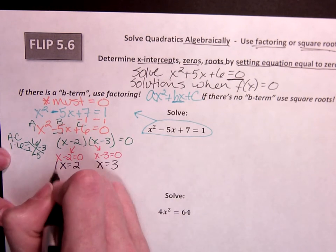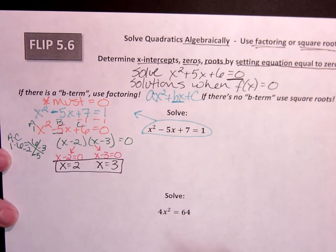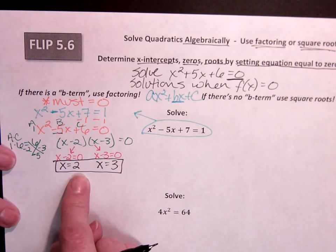And I now have two places, two solutions. It tells me my graph crosses the x-axis in two places.